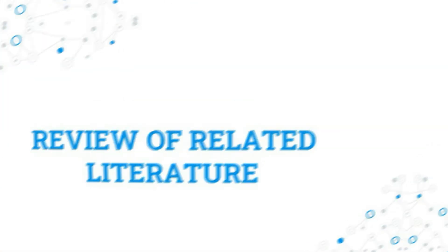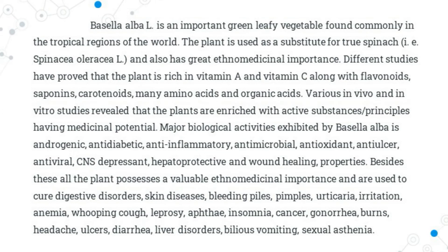A review of the taxonomy, ethnobotany, phytochemistry, and pharmacology of Basella alba: Basella alba is an important green leafy vegetable found commonly in tropical regions of the world. The plant is used as a substitute for true spinach and also has great ethno-medicinal importance. Different studies have proved that the plant is rich in vitamin A and vitamin C, along with flavonoids, saponins, carotenoids, many amino acids, and organic acids. Various in vivo and in vitro studies revealed that the plants are enriched with active substances having medicinal potential.